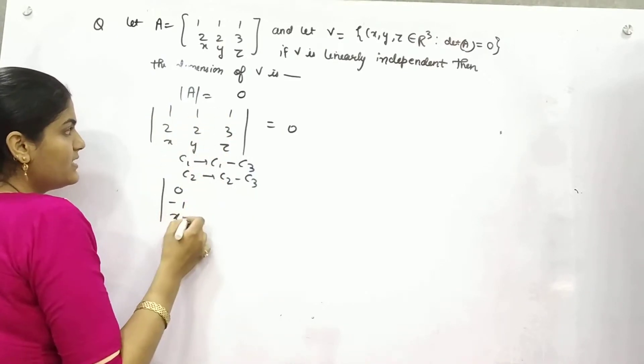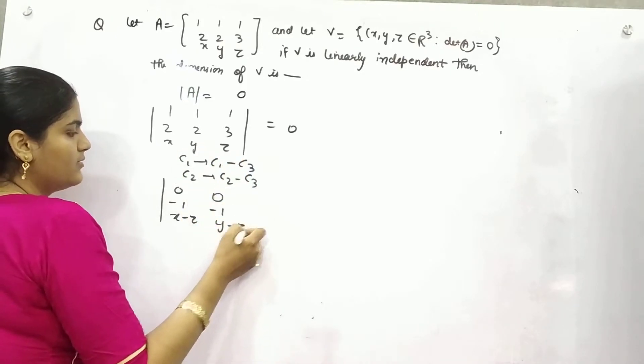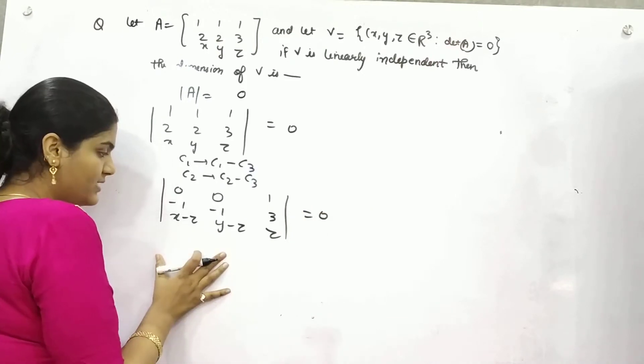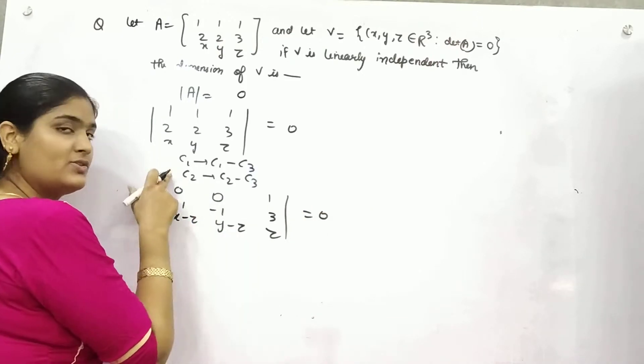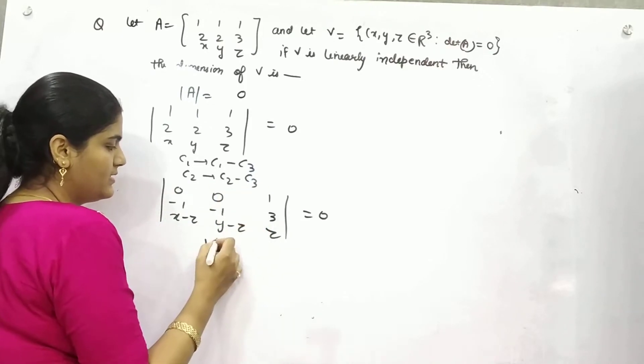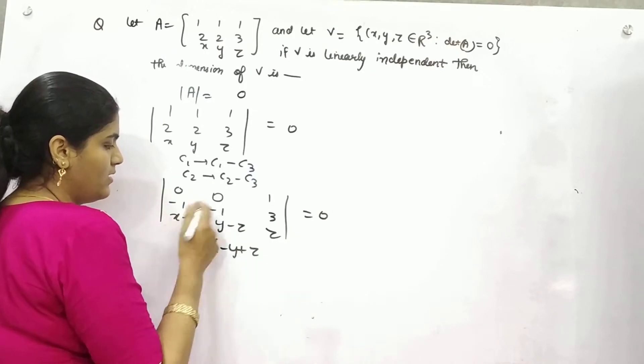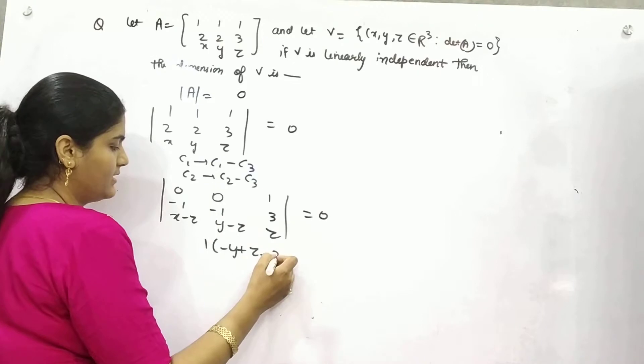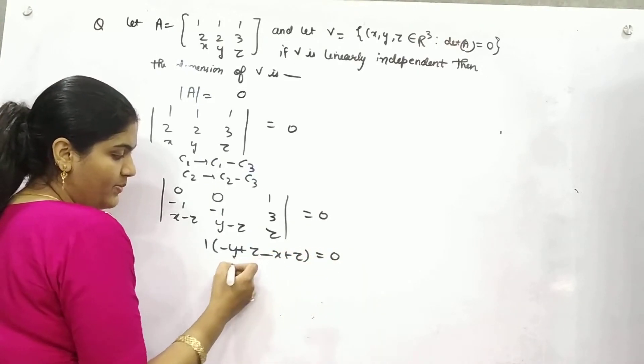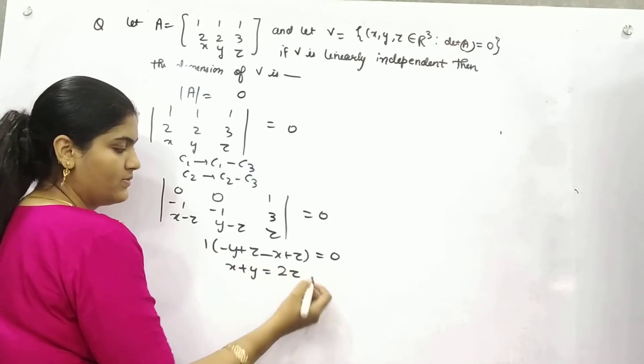So if you expand it—I did it just to make the question easier—from here it would be minus y plus z minus x plus z equals zero. So it would be x plus y equals 2z, equation number 1.